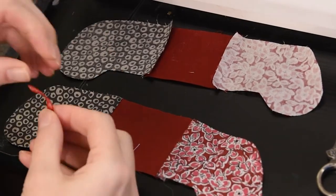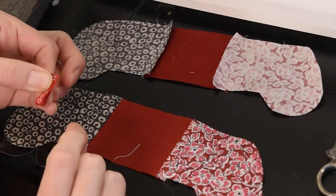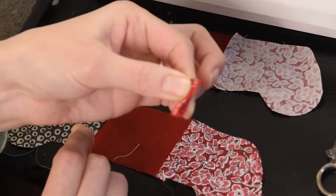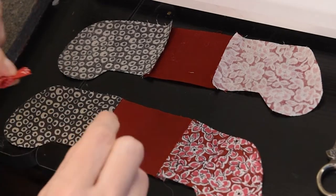So you're going to take a little bit of ribbon, fold it in half and you're just going to line it up.